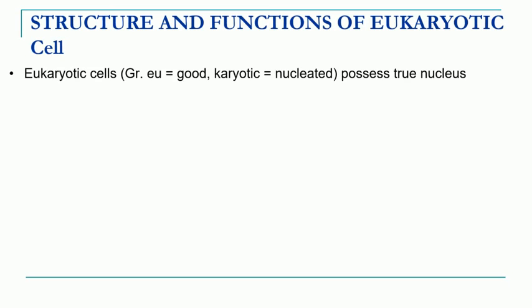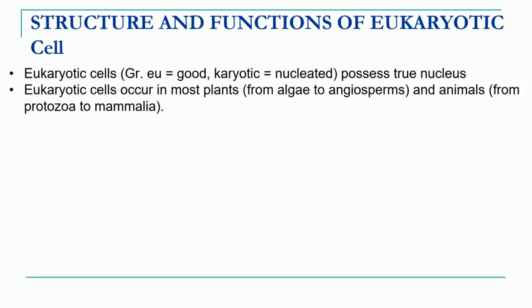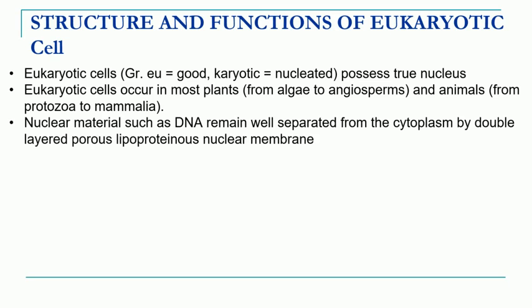First, we will understand some basic characteristics of an eukaryotic cell. In the last lecture we discussed that 'eukaryotic' means 'eu' means true and 'karyon' means nucleus. So, these are the cells which possess the true nucleus. Now, these eukaryotic cells are present in algae, fungi, animals — from protozoans to higher mammals — and also in plants.